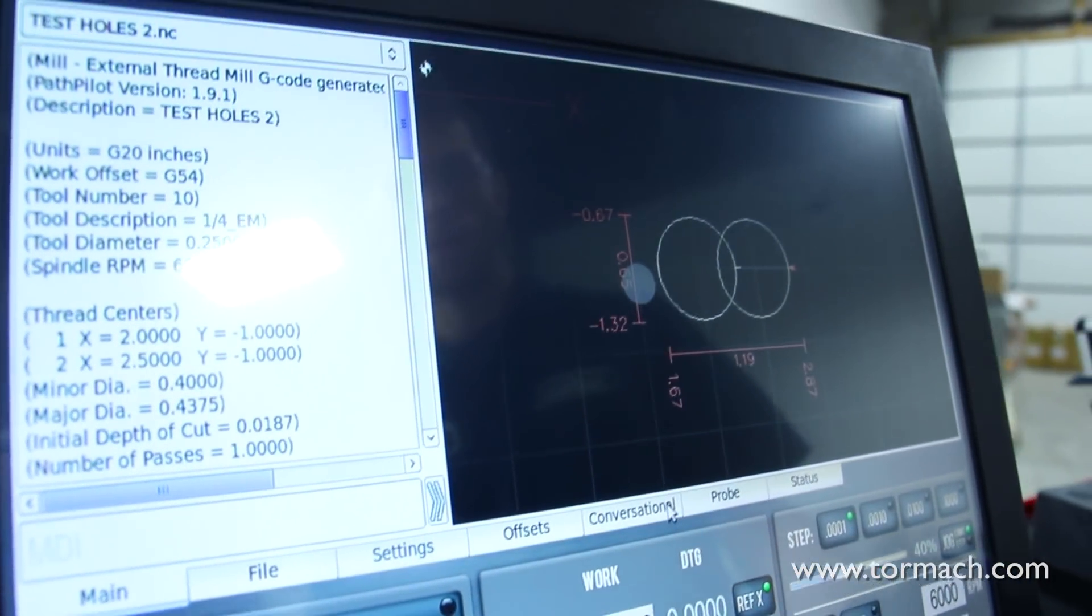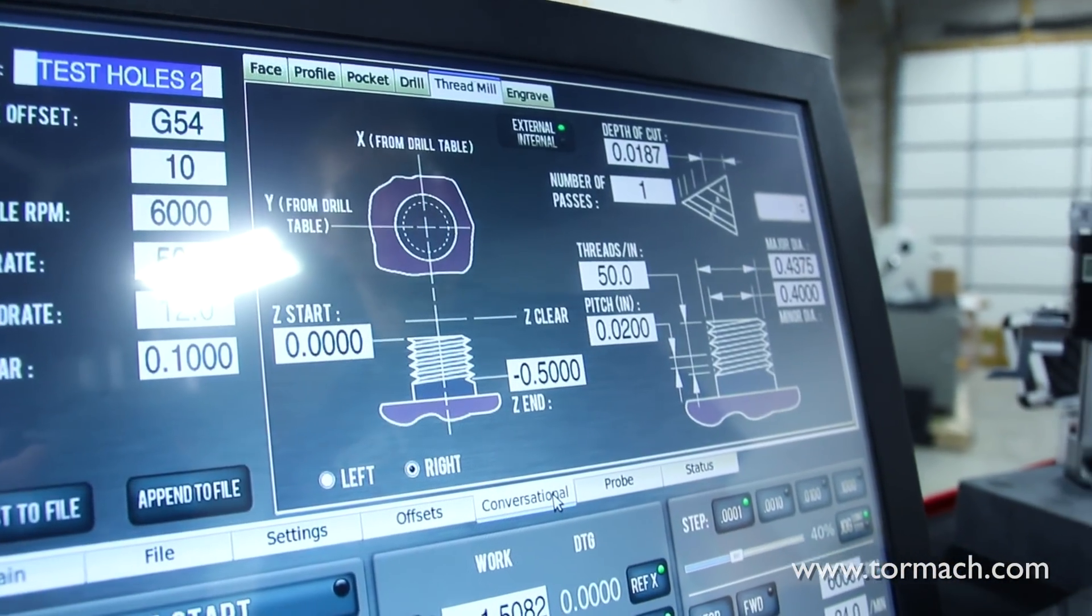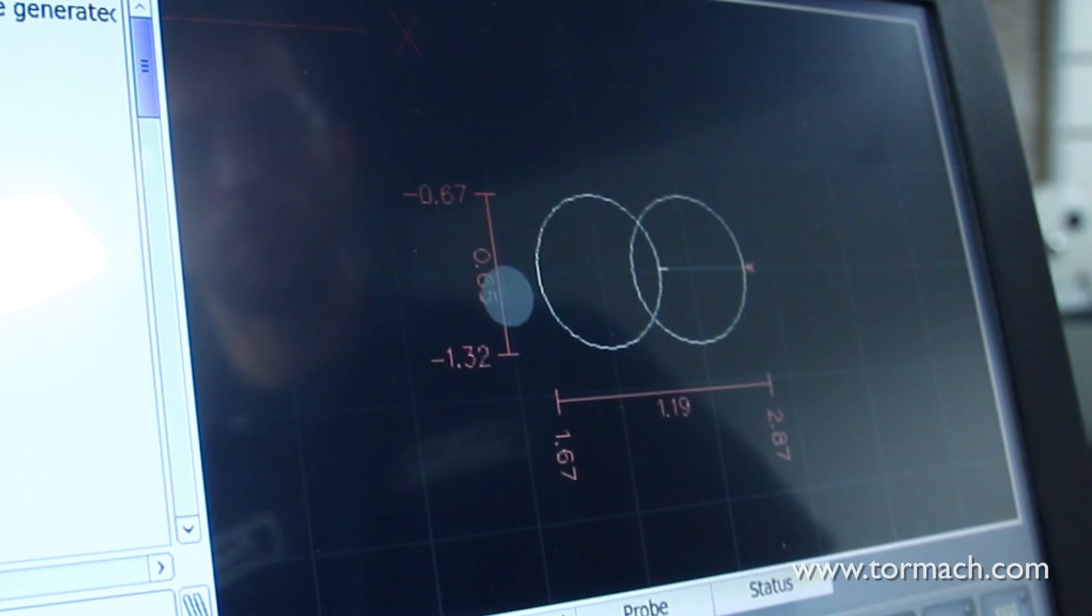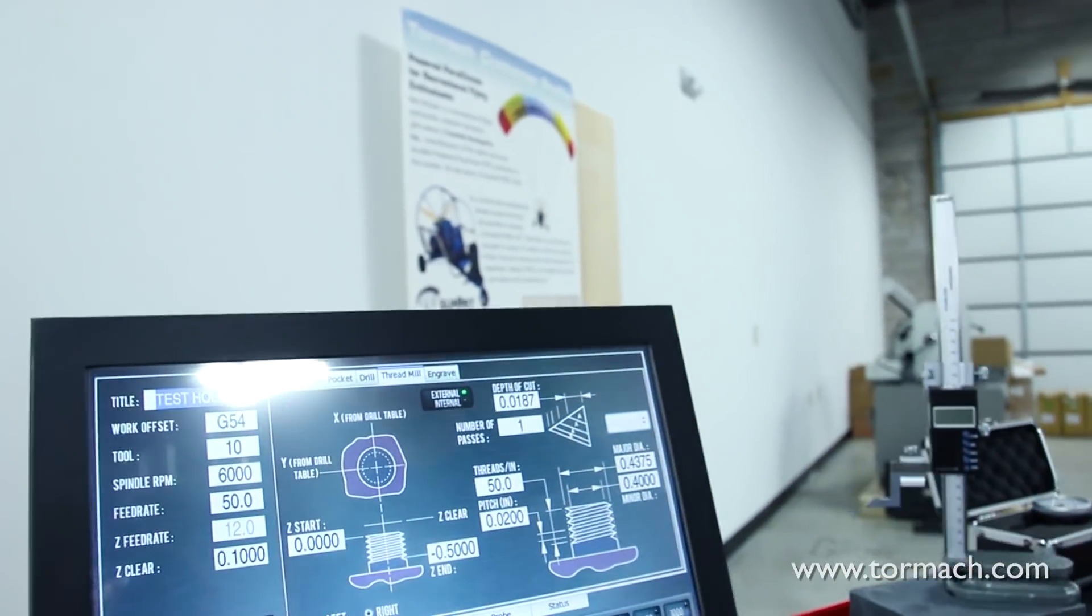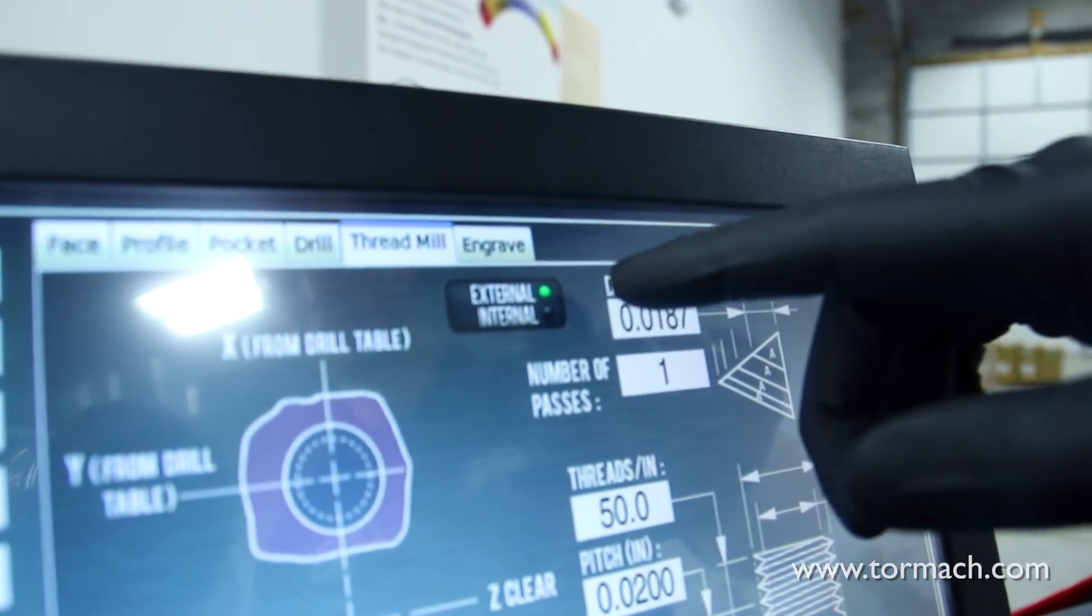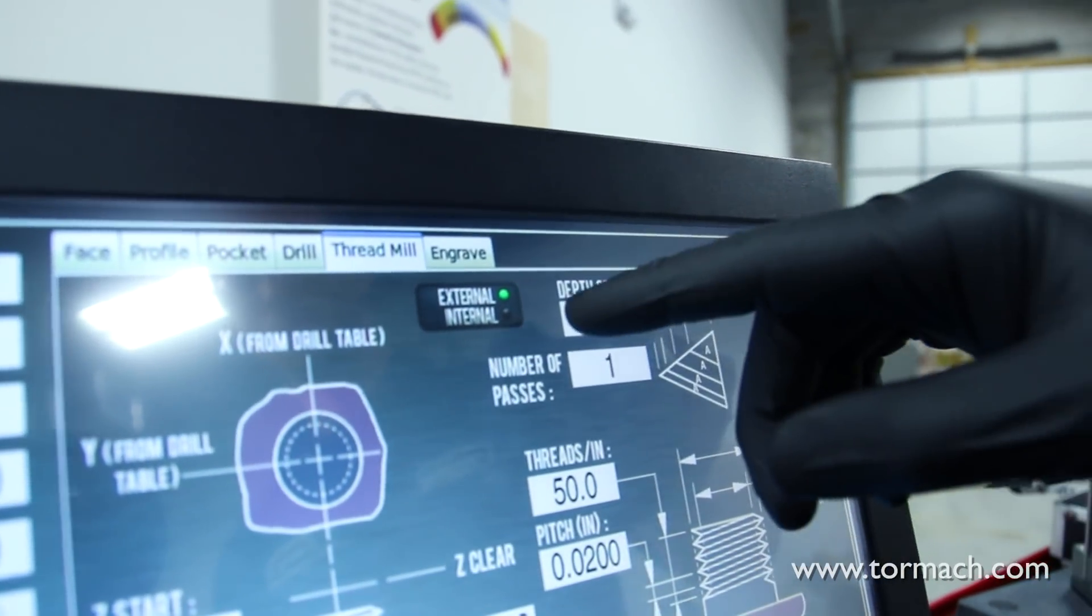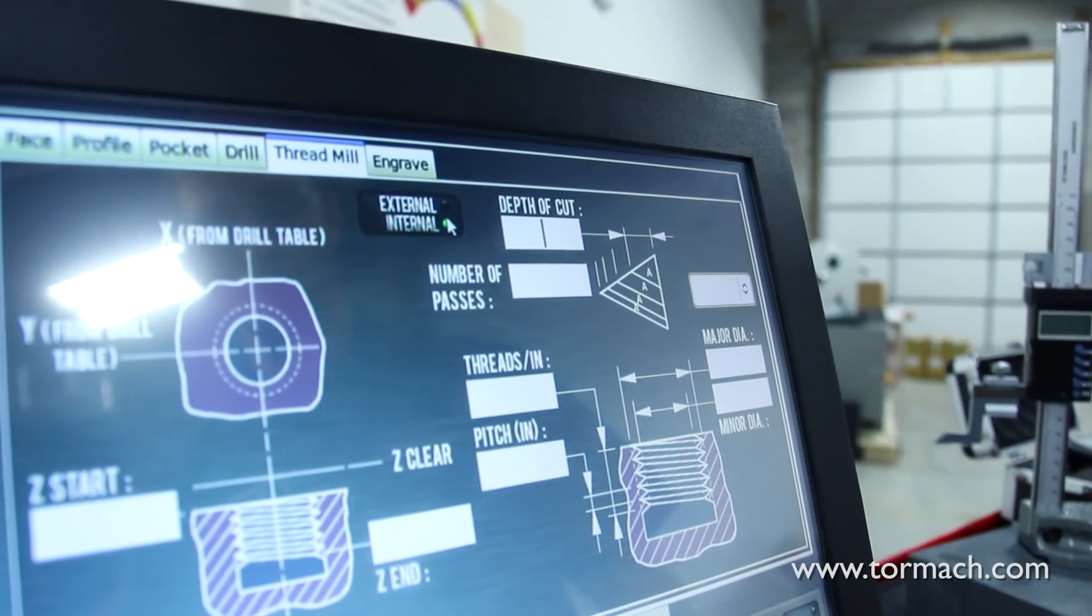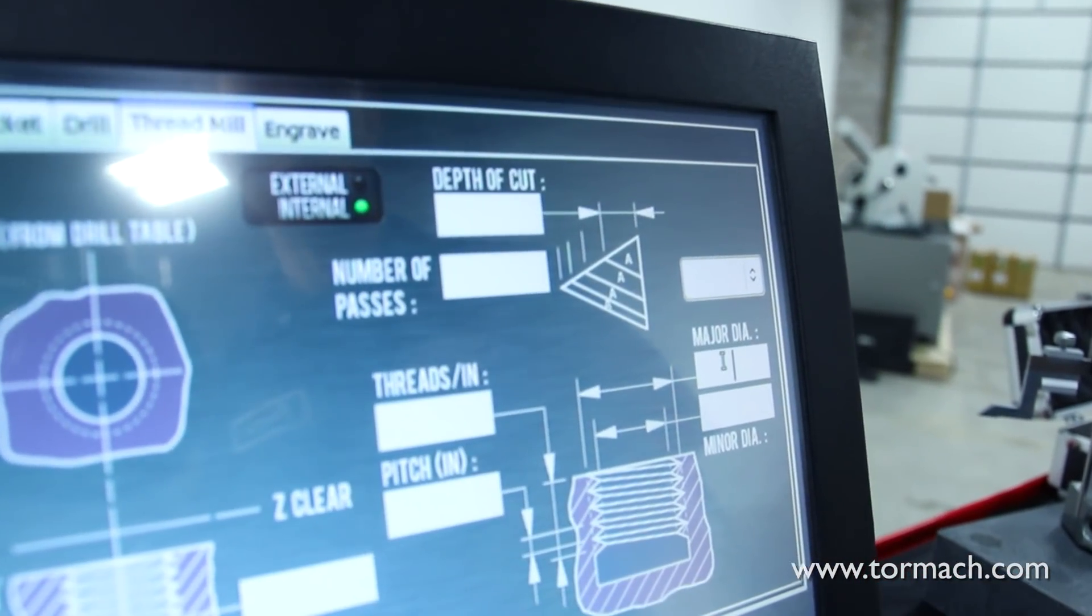When I looked at my toolpath here, it's kind of a nice error checking. My circles looked a little too large, so I went back and checked my conversational to see what mistake I made. I had internal and external option, and I have external chosen here. So I want to choose internal thread.